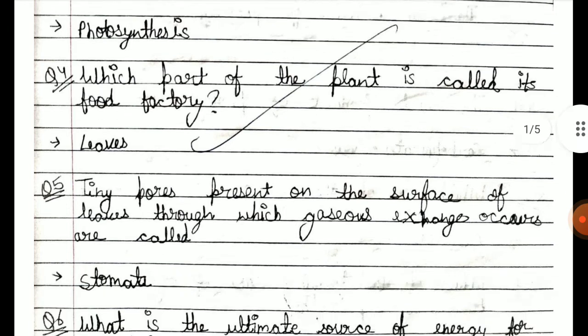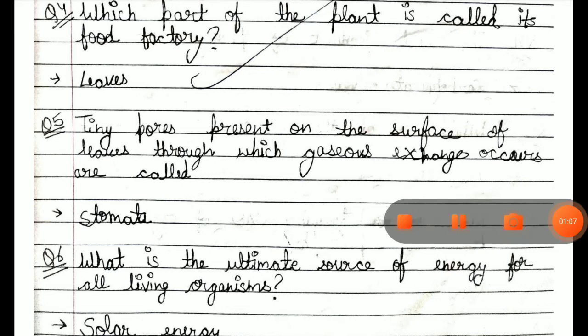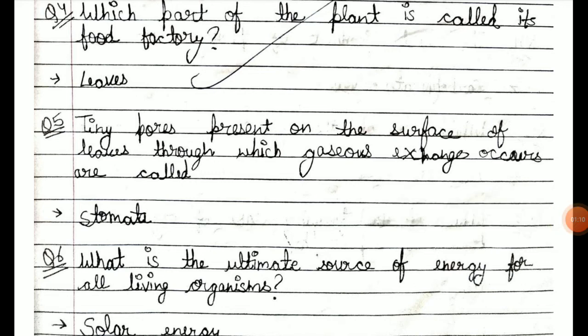Tiny pores present on the surface of leaves through which gaseous exchange takes place are called stomata.